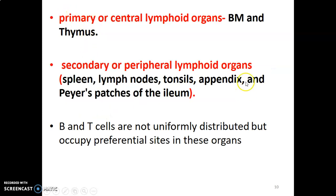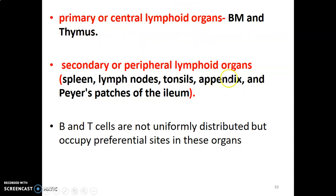Lymphoid organs are divided into primary or central lymphoid organs, such as bone marrow and thymus — that's where they are produced. Both T and B cells are produced in the bone marrow, and T cells mature in the thymus. From these, they migrate to secondary lymphoid organs such as the spleen, lymph nodes, tonsils, appendix, and Peyer's patches.